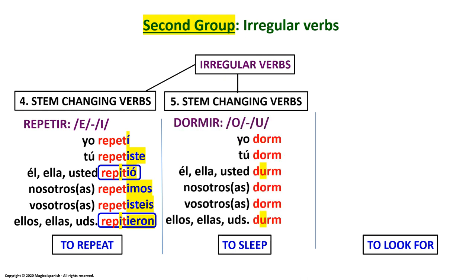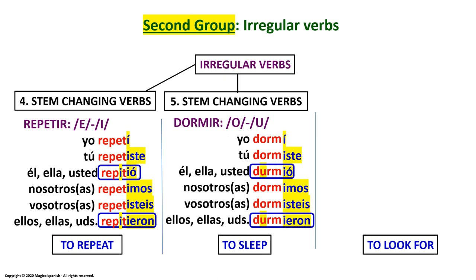Group number five: stem changing verbs. These verbs are going to change the letter O into U. In preterite, that would be: Yo dormí. Tú dormiste. Él, ella, usted durmió. Nosotros, nosotras dormimos. Vosotros, vosotras dormisteis. Ellos, ellas, ustedes durmieron. Again, pay attention to the third person singular: él, ella, usted durmió — the letter O changes into U. And the third person plural: ellos, ellas, ustedes durmieron — the same change, O into U.